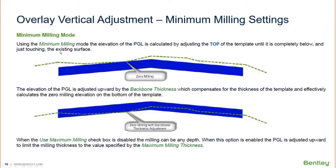At a really low level, if we were to set everything to zero milling, the PGL would be calculated by adjusting the top of the template until it was completely below and just touching the existing surface at the critical point. Adding backbone thickness raises up the template so it hits that point — that would be zero milling. If you use the maximum milling option, when disabled, the milling can be any depth. But if you need to limit milling and want a maximum milling thickness, toggle that option on and key in a value to set the maximum amount of milling allowed.